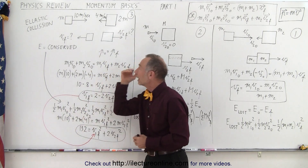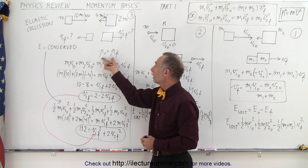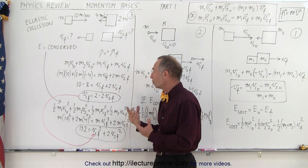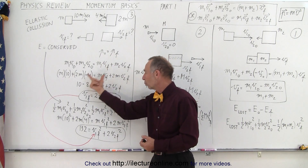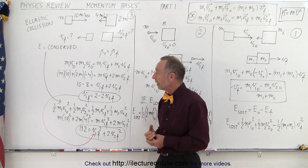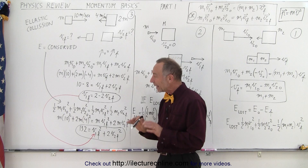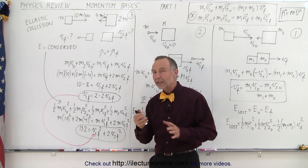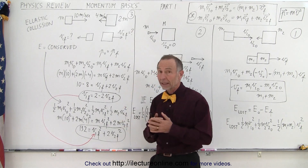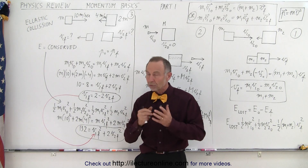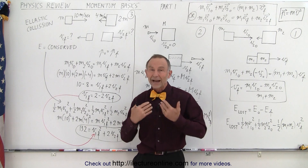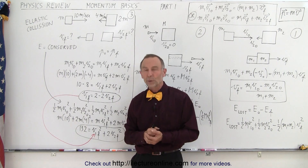So to summarize: either the two objects stick together giving one unknown, or they don't stick together giving two unknowns — in which case you use a given energy condition or the elastic collision condition to set up two equations and solve simultaneously. There's more to it, including impulse, which is related to momentum and we'll cover that next. But this gives a good overview of the types of momentum problems you will encounter.